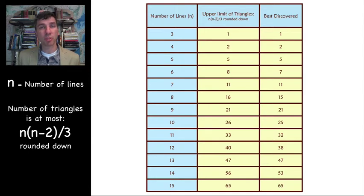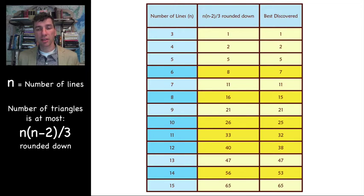So we see that six, eight, ten, eleven, twelve, and fourteen, the best discovered solution is not equal to that upper bound. Now, we know that for six and eight that actually the upper bound of n times n minus two divided by three can't actually be met.